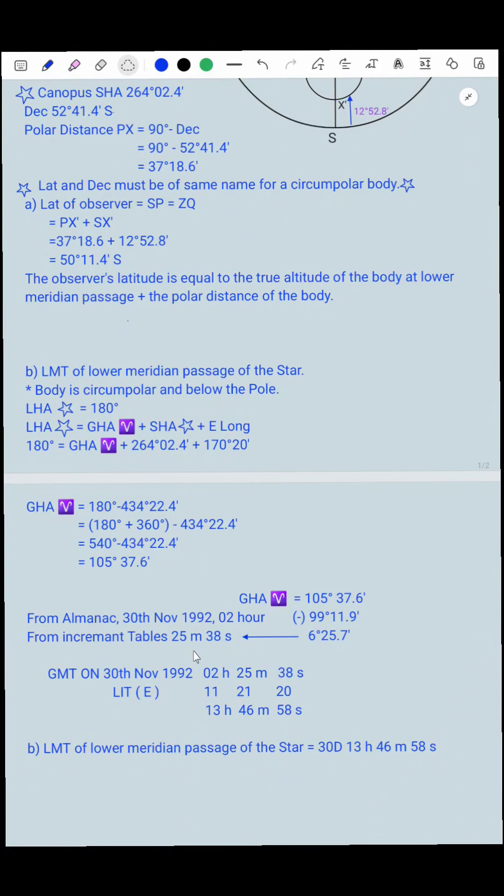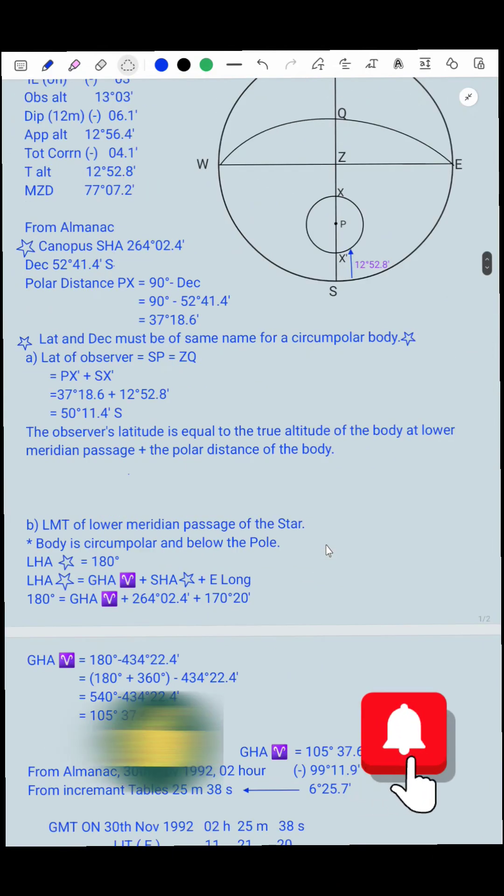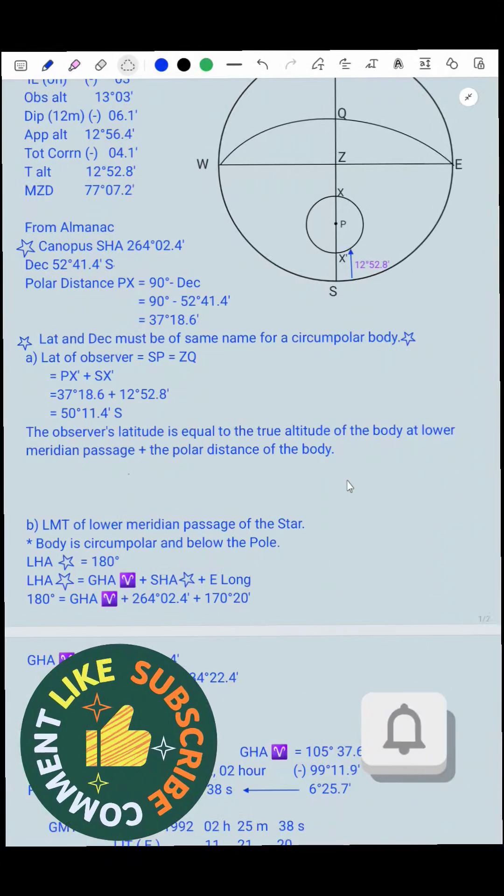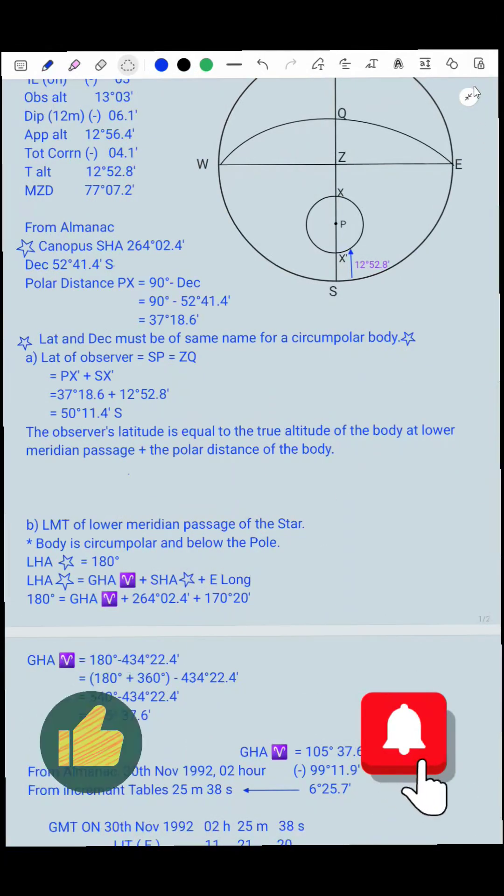And now we apply longitude in time. Longitude is 170 degrees 20 minutes divided by 15, we got 11 hours 21 minutes 20 seconds. And GMT plus longitude gives LMT. If we add together we got 13 hours 46 minutes 58 seconds. So the final answer is LMT of lower meridian passage of the star is on the 30th day, 13 hours 46 minutes 58 seconds. I hope you have understood this solution. Thank you.